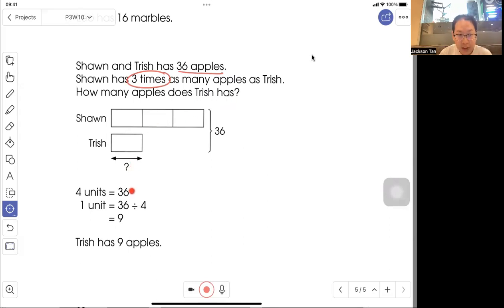So one, two, three, four. Four units is thirty-six. The final one unit just takes thirty-six divided by four equals nine. Trish has nine apples.